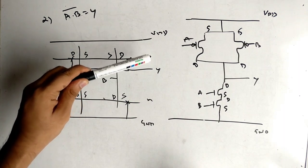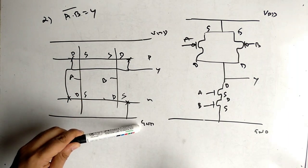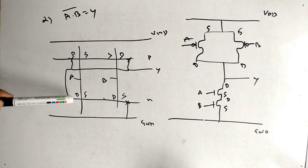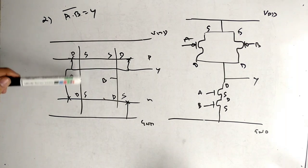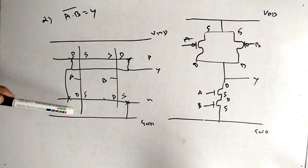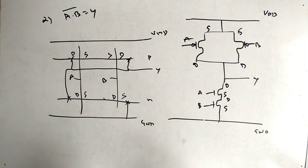This is the complete stick diagram. The colors: VDD and ground lines are blue, PMOS diffusion is yellow, NMOS diffusion is green, the vertical polysilicon lines are red, and the connection crosses are in black.